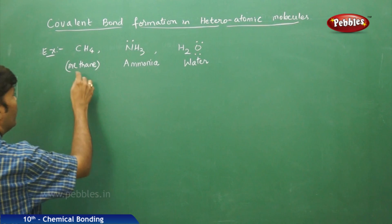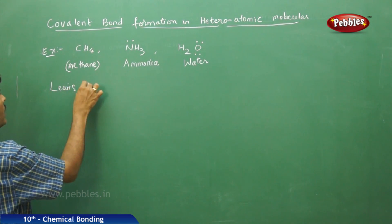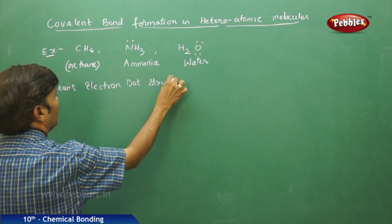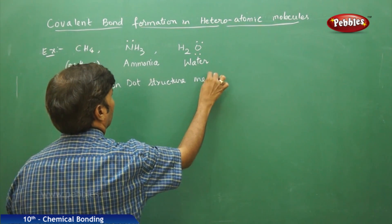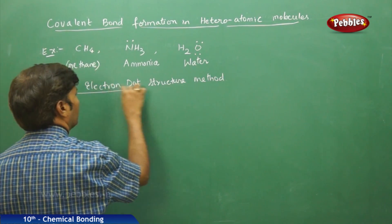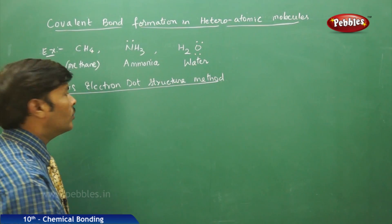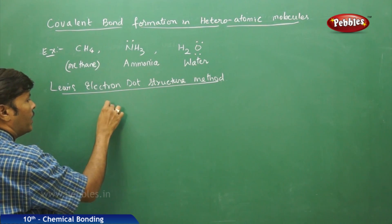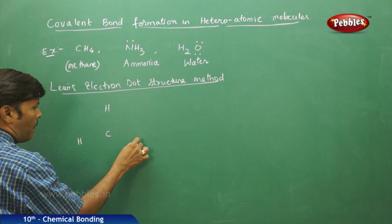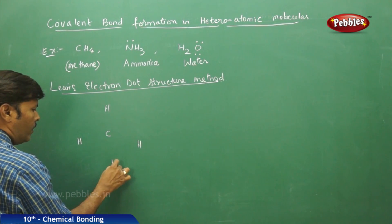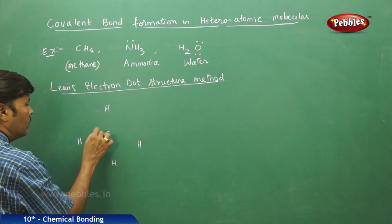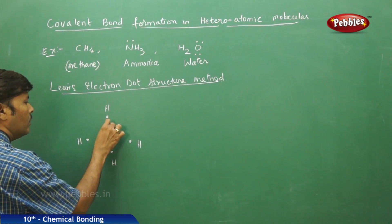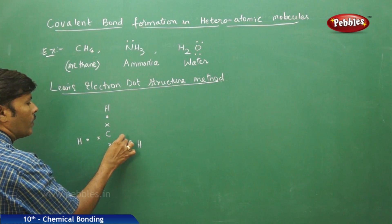If you take methane and use the Lewis electron dot structure method for covalent bond formation, take carbon as the central atom and place 4 hydrogens at the 4 corners. Each hydrogen has one valence electron and each carbon has 4 valence electrons: 1, 2, 3, and 4.